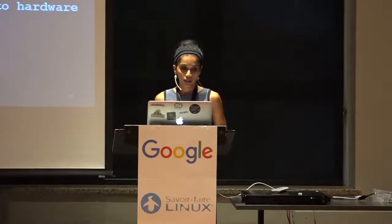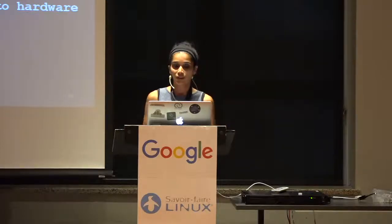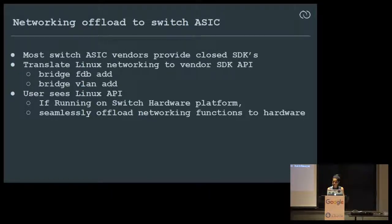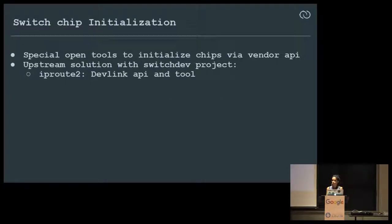Most of these vendors still have proprietary SDKs running mostly in user space. We had to map the Linux API to the SDK API. For example, a bridge FDB add — which adds a forwarding entry into a bridge — had to be mapped to an SDK API that programmed the hardware. The user basically sees the Linux API and does everything they would do on a server, while we seamlessly offload the networking functions to hardware. Switch chip initialization: vendor SDKs and APIs are proprietary and closed, so we wrote tools and scripts to do it in a Linux way using a file-based config.